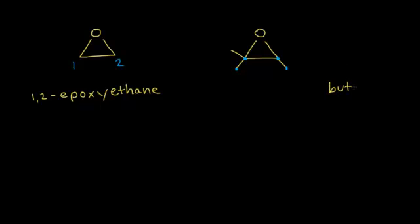Next, number the carbon chain to give the lowest number possible to the substituents. In this case, it makes more sense to number from the left, so I get 1, 2, 3, and 4 to give my substituents the lowest number possible.